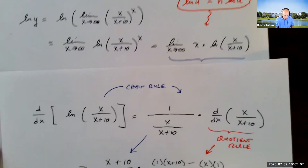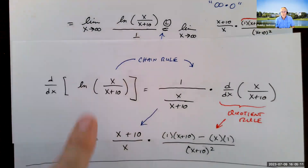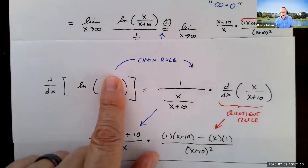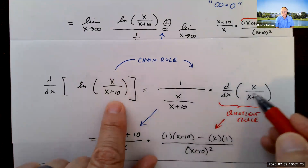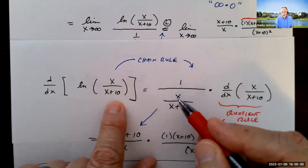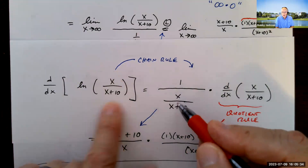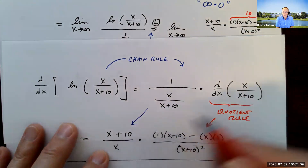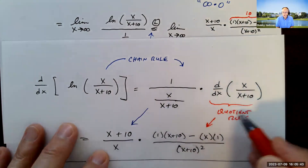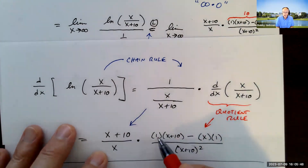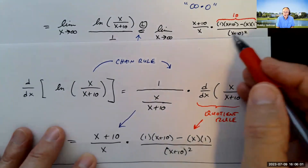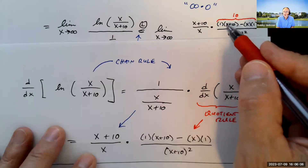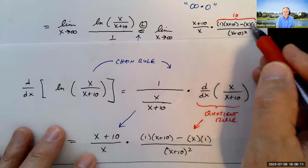Applying L'Hôpital's rule, I take the derivative of the top: d/dx of ln(x/(x+10)). Using the chain rule, the outer function is ln(u) giving 1/u, and the inner function is x/(x+10). So it's (x+10)/x times the derivative of x/(x+10). By the quotient rule, that derivative is: [1·(x+10) − x·1] divided by (x+10)^2. The numerator simplifies — x+10 minus x leaves just 10 — so the whole thing simplifies to 10 over x times (x+10)^2, and combined with (x+10)/x we get a compact expression.